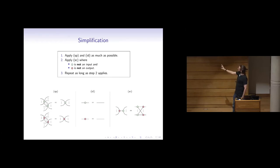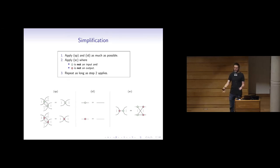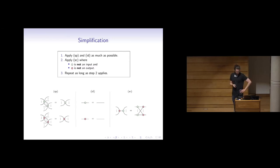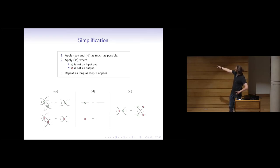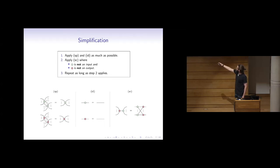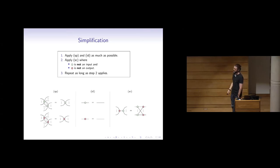One of the nice things about this fragment is there's an evident simplification strategy. If I have some big phase-free ZX diagram, I can always get it down to a very reduced form whose size is polynomial — in fact linear — in the number of qubits. I apply spider fusion and identity rules as much as possible, then apply strong complementarity wherever a green dot is not on an input and a red dot is not on an output, and loop through until no rule matches. Each iteration strictly decreases the count of green dots not on input wires plus red dots not on output wires, so it terminates.